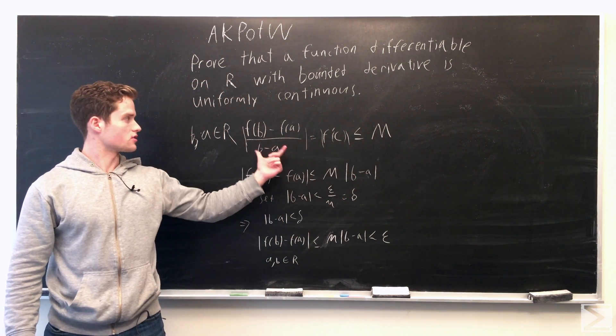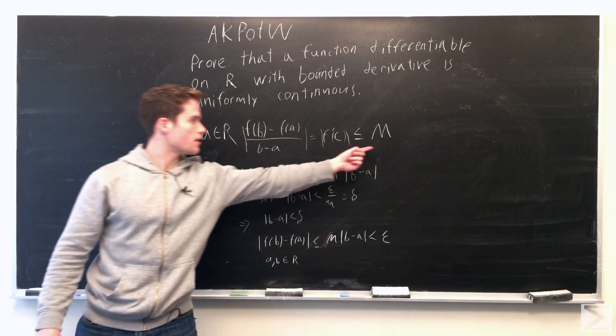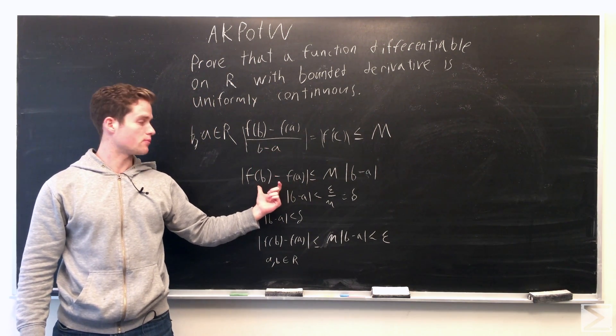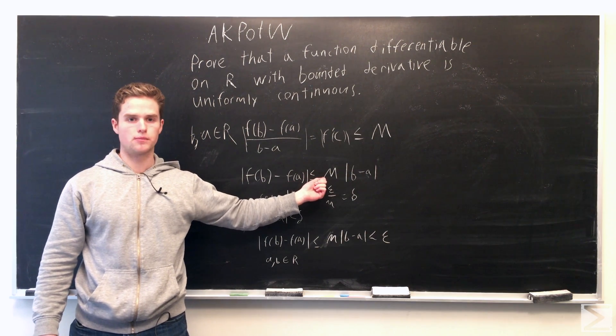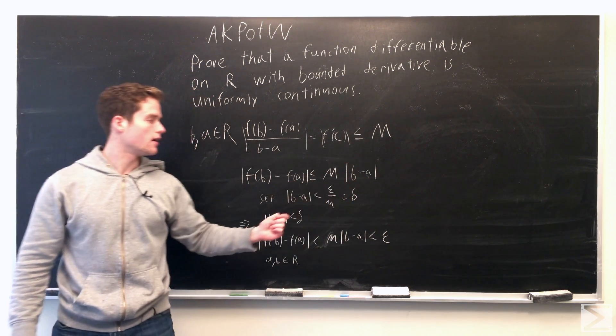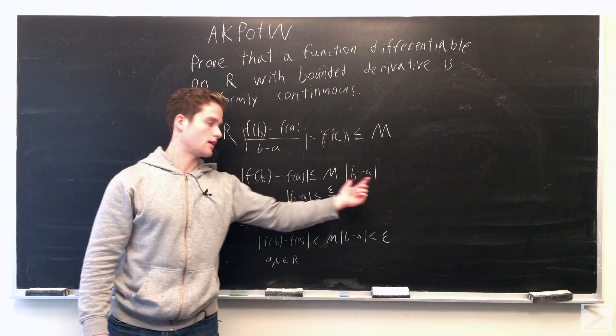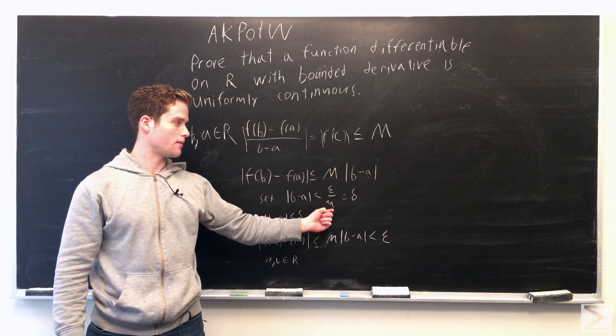So using an inequality involving this and m, and multiplying by the absolute value of b minus a, we get that the absolute value of f of b minus f of a is less than or equal to m times the absolute value of b minus a. And this is for arbitrary b and a. And so we set this distance between b and a less than epsilon over m, and this is going to be our delta.